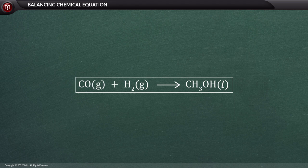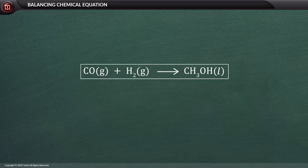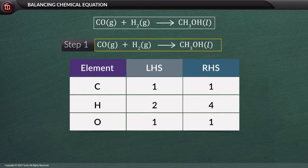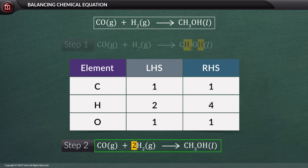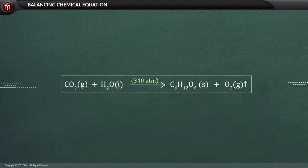Let us take another example: CO(g) + H₂(g) → CH₃OH(l). Step 1: The H atom is 4 in number on the right-hand side. We put a 2 before H₂ on the LHS. There is one C and one O atom each on the LHS and RHS. We must further cross-check the equation.